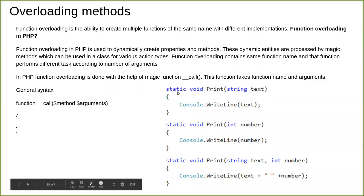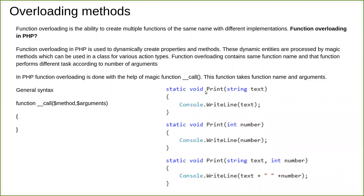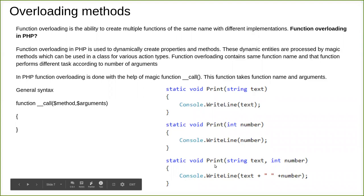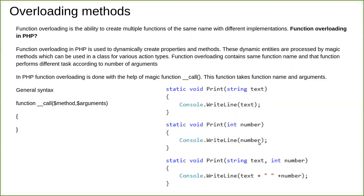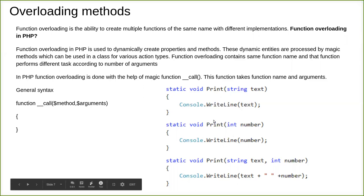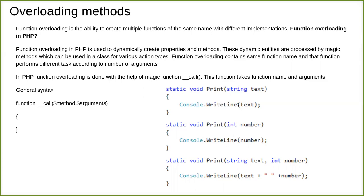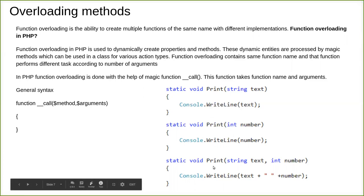For example, this is a little bit of Java code. We have written a function called 'print' here, and also another 'print', and another 'print' — the function names are the same. In C, since it doesn't support the OOP concept, there is no overloading at all. It will throw an error because you have written three functions with the same name. But in object-oriented languages, since overloading is supported, even if there are many copies of the same function, the compiler handles it.